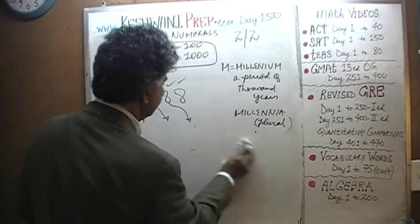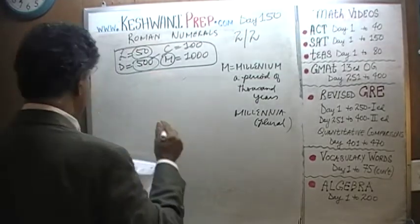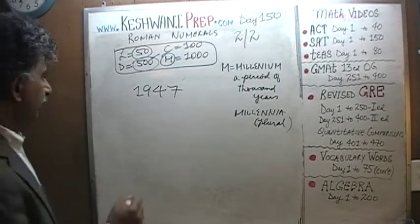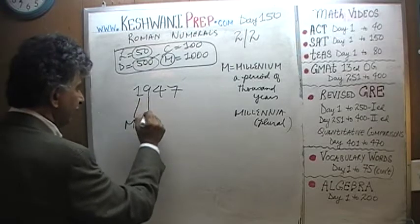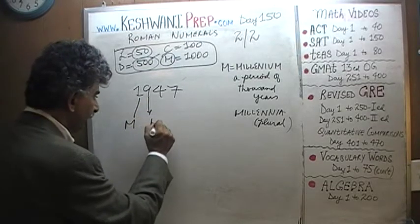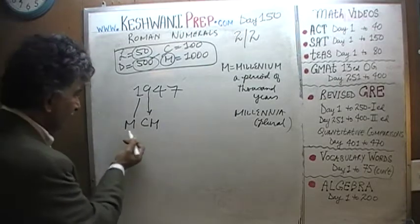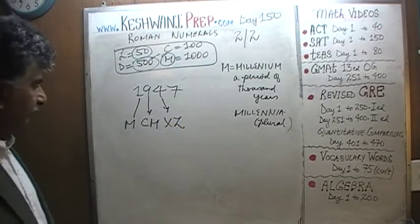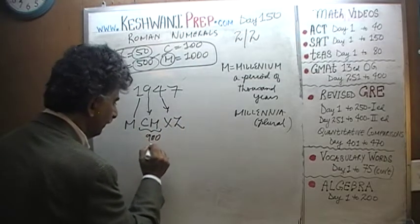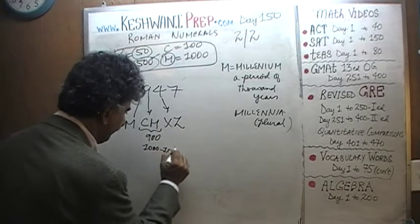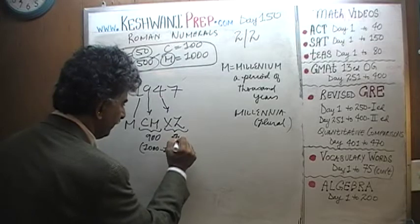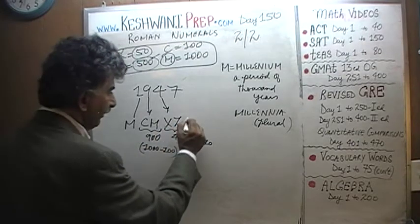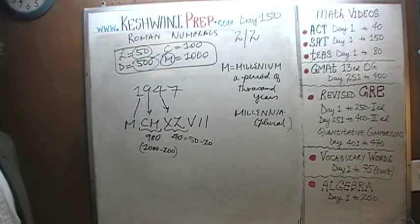One thousand nine hundred and forty-seven — 1947. How do we write it? One thousand is M. Nine hundred is CM — a thousand minus a hundred. Then forty is XL — fifty minus ten, because X appears to the left of L. And then seven is VII — five plus one plus one. So nineteen hundred and forty-seven.